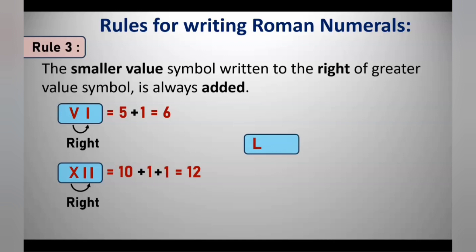Similarly, if XV is written to the right of L, it means 50 plus 10 plus 5 — we add all three terms — which gives 65.